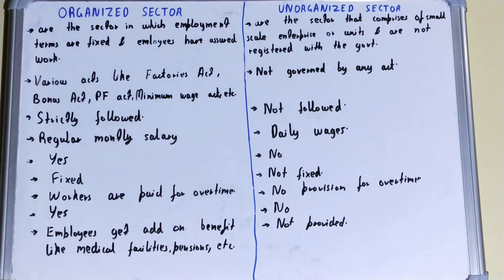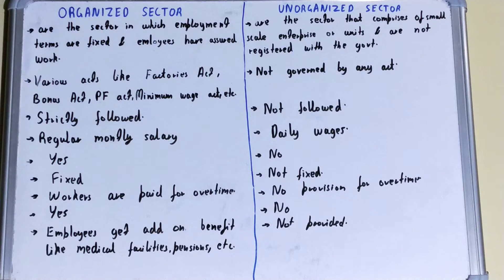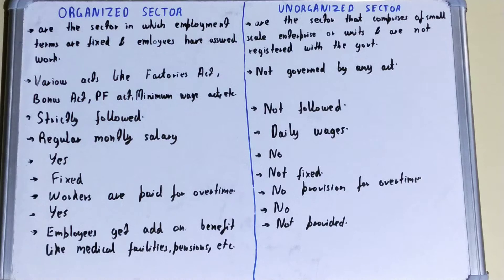Organized sectors are registered with the government and they work as per the norms and the rules set by the government. For example, permanent workers in a factory or organization come under the organized sector.